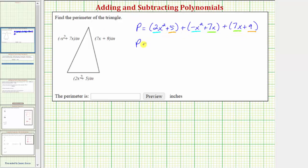So the perimeter P is equal to two x squared. Now we can write plus negative x squared, or just minus x squared. Let's write plus negative x squared. And then we have plus seven x plus seven x. And then finally, plus five plus nine.